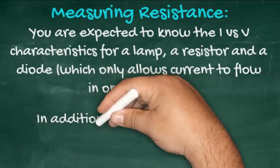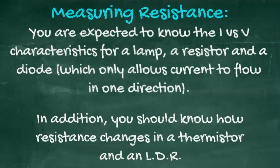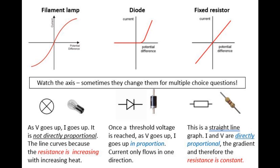You are expected to know the I versus V characteristics for a lamp, a resistor, and for a diode. A diode just allows current to flow in one direction. And here are the I versus V characteristics. For the filament lamp, as V increases, I increases, but it's not a straight line. It's a curve, because as the current increases, the temperature increases, and as the temperature increases, so does the resistance. A diode only allows current to flow in one direction, so if the potential difference is negative, current will not flow. Once a positive threshold is reached, the voltage increases proportionally with the current. The I versus V characteristic for a resistor is a straight line going through the origin. This means that current is directly proportional to the potential difference applied.